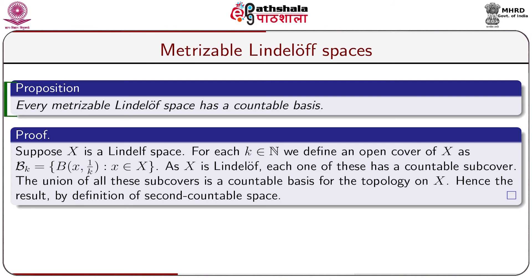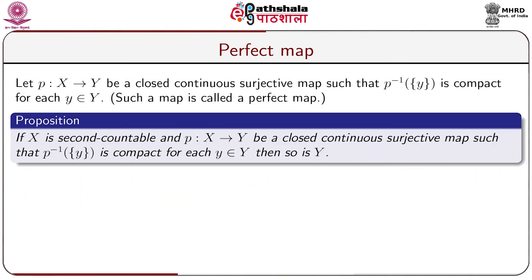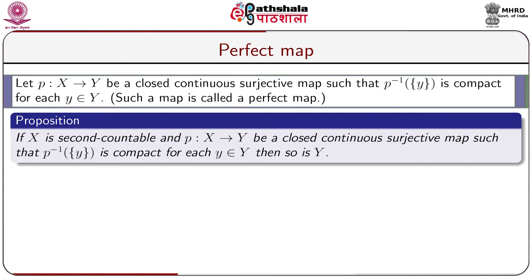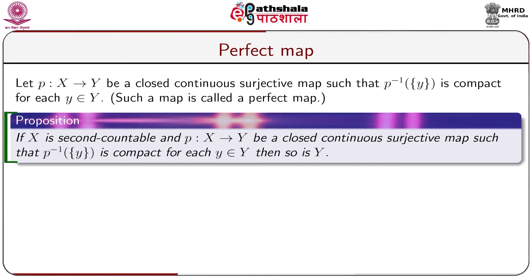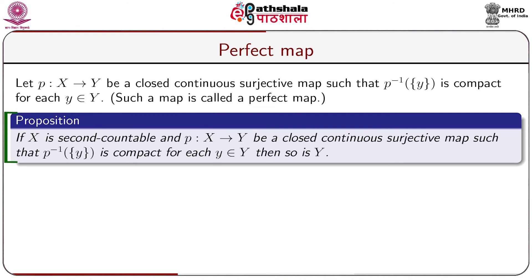An important theorem states that every metrizable Lindelof space is second countable. The proof is not difficult and is given in the slide; we are omitting it here. A map P: X → Y is called a perfect map if it is a closed continuous surjective map and for each y ∈ Y, P⁻¹({y}) is compact. We will go into details on compactness in a subsequent discussion.